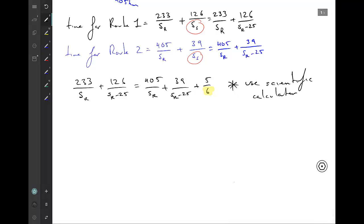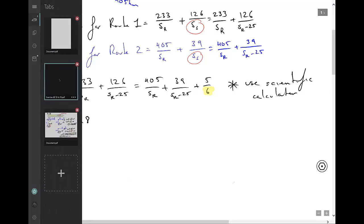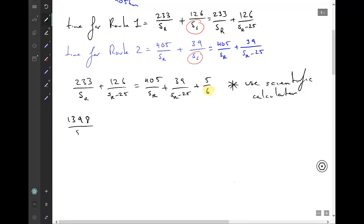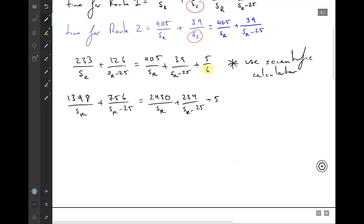So we will end up with 1398 on SR plus 756 on SR minus 25 equals 2430 on SR plus 234 on SR minus 25 plus 5. Now we basically just multiply every term by both SR and SR minus 25. So I'll do that in one step.